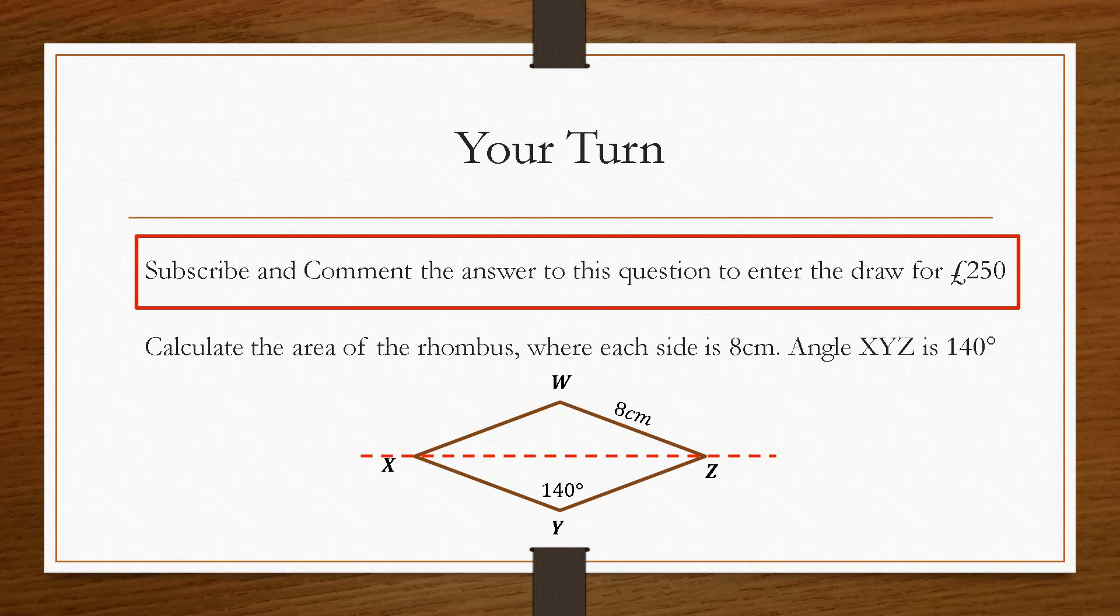This one says calculate the area of the rhombus where each side is 8 centimetres and the angle XYZ is 140 degrees. Using the same process as either example 1 or example 2, you will be able to calculate the area of the rhombus. The clue is to use the dashed red line to indicate that there is a line of symmetry here.